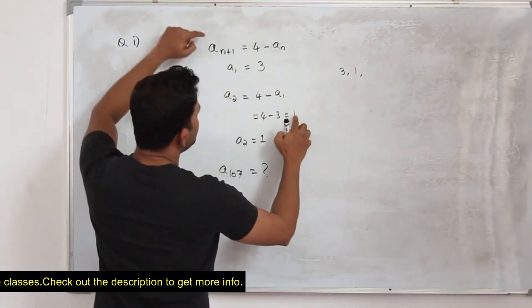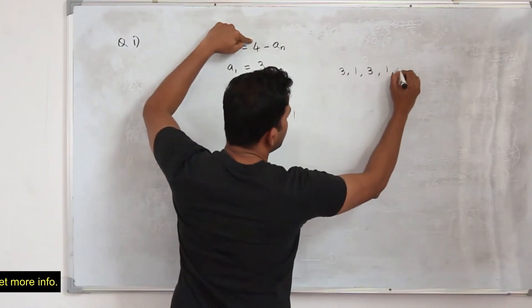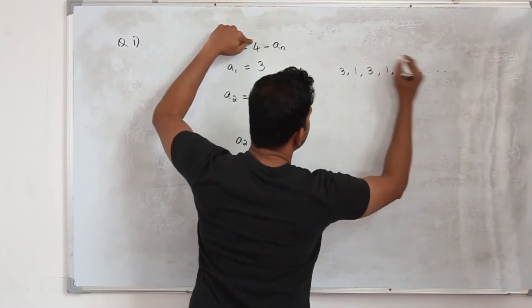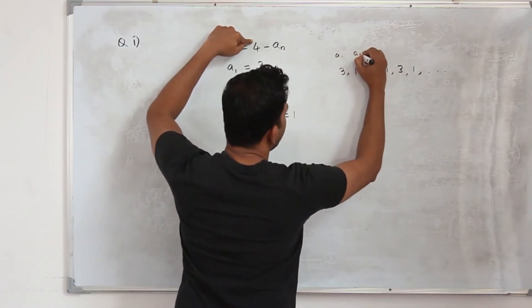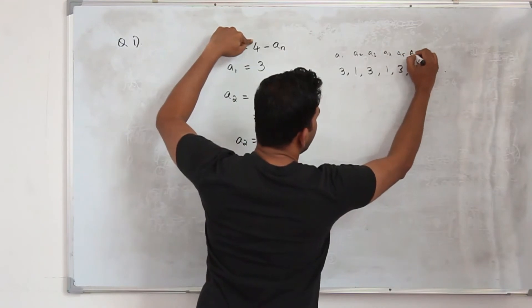When you substitute a₂ here, 4 minus 1 is 3. So the pattern is 1, 3, 1, etc. You can see this is a₁, a₂, a₃, a₄, a₅, a₆, etc.